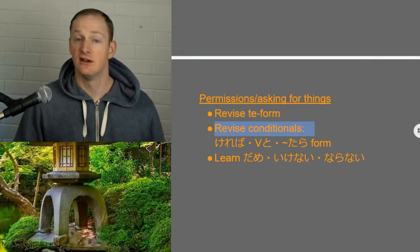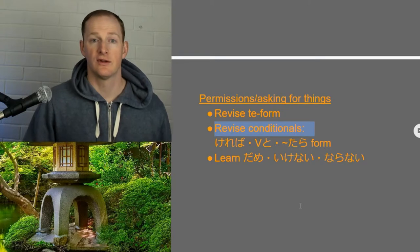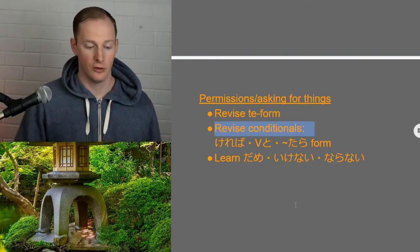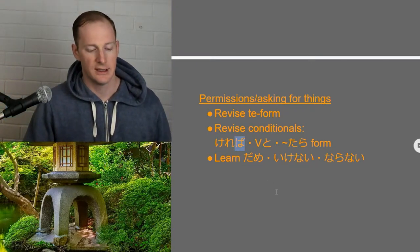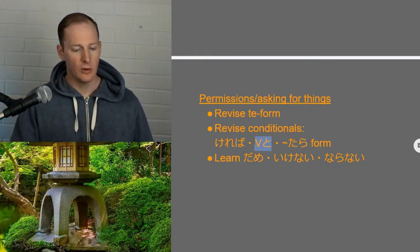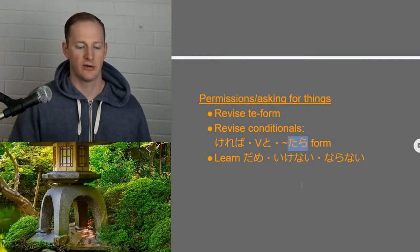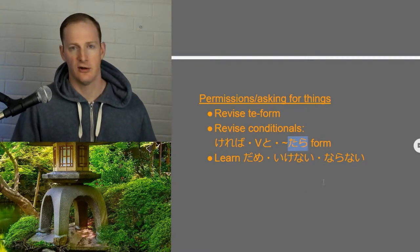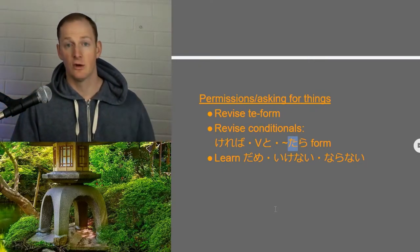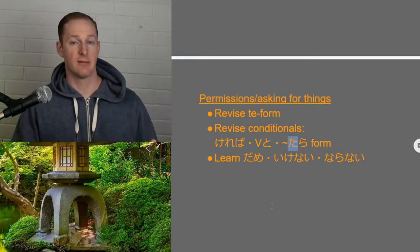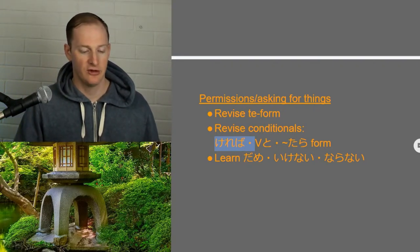The next thing is you really want to revise your conditionals — so how do we create an IF or WHEN statement. Tae Kim's got a really good section on his website just called Conditionals. We need to know our KEREBA or BA conditional, which is a conjugation. Then we want to know our TO conditional — really just adding TO on the end — which is the natural conditional. And then the TARA form, which deals with plain verbs. You want to know these really well because you'll need to make them on the fly, especially for MUST or HAVE TO permissions.